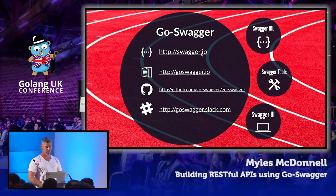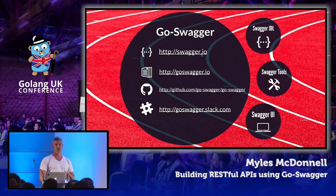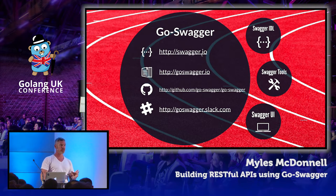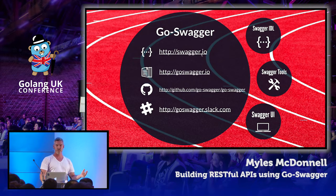Go-Swagger is written in Go and it is the code generation piece for Go — you can create server templates and client libraries. It's worth mentioning the server templates don't use any of the popular frameworks; they use core Go libraries, which is quite nice because you can then use all the other standard web-type libraries and packages out there, namely middleware.